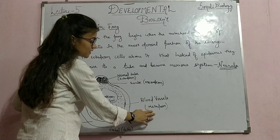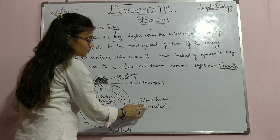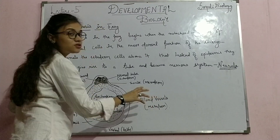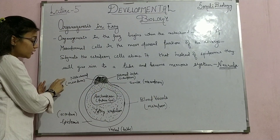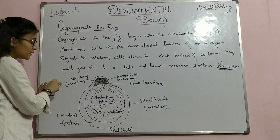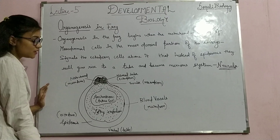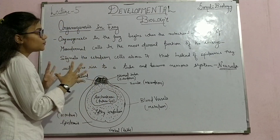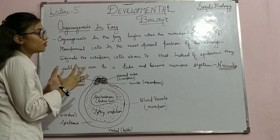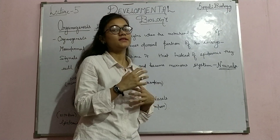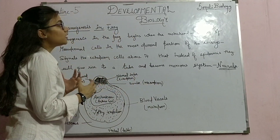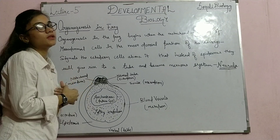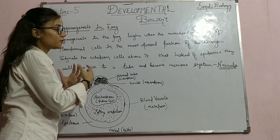Here you can also see mesodermal cells that are developing into blood vessels or other organs. The notochord is developed by mesodermal cells. You can see the process of rearrangement of cells according to the organ which they are going to develop in the future frog.